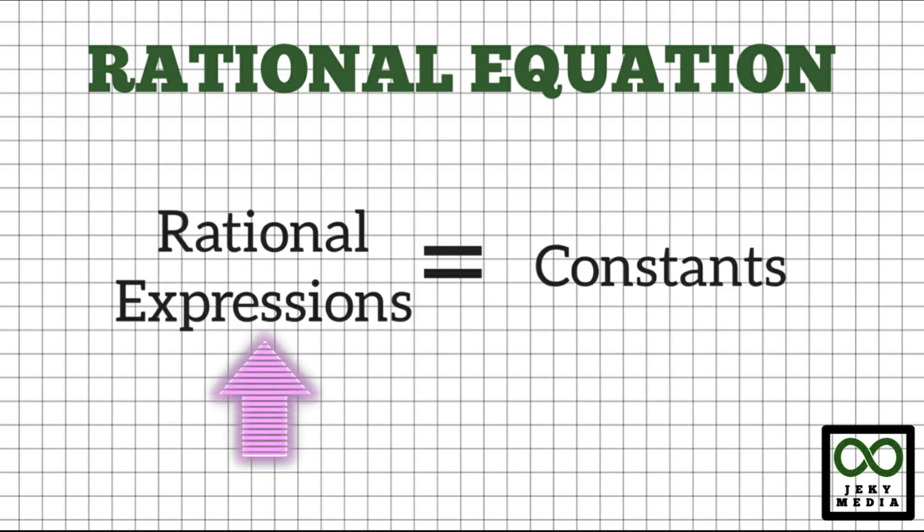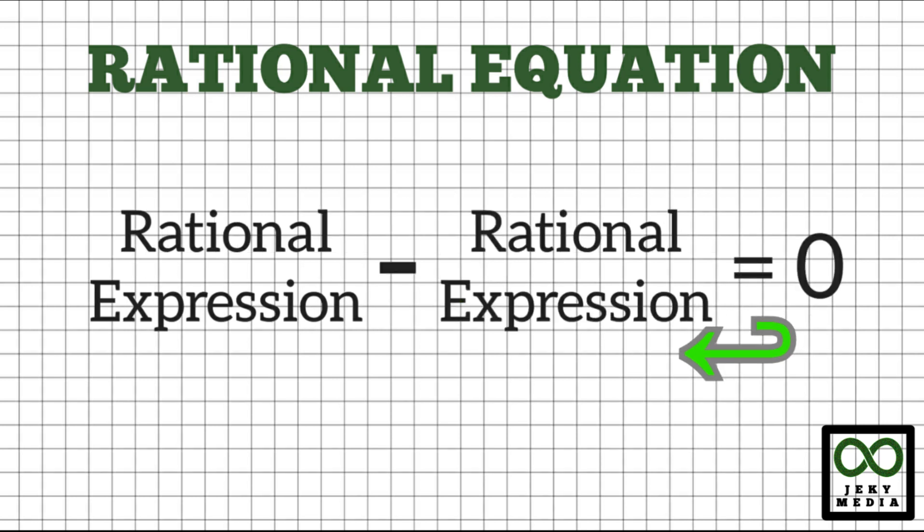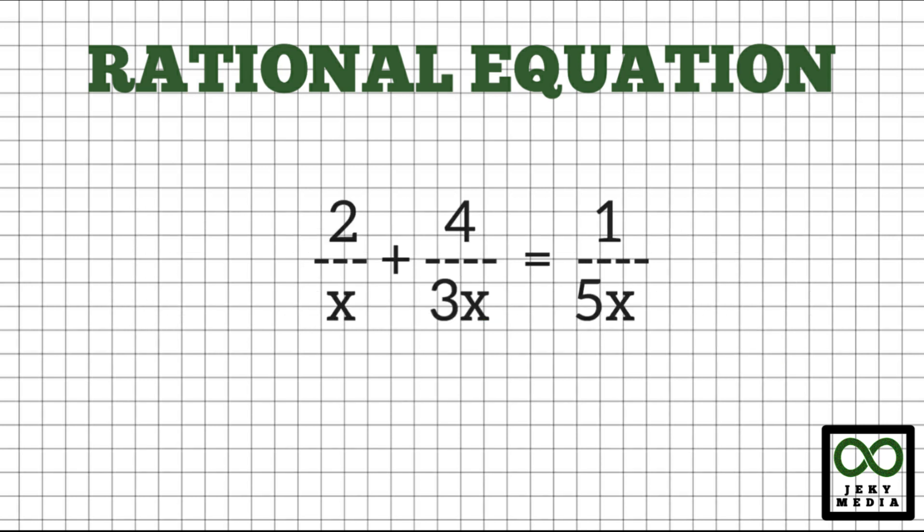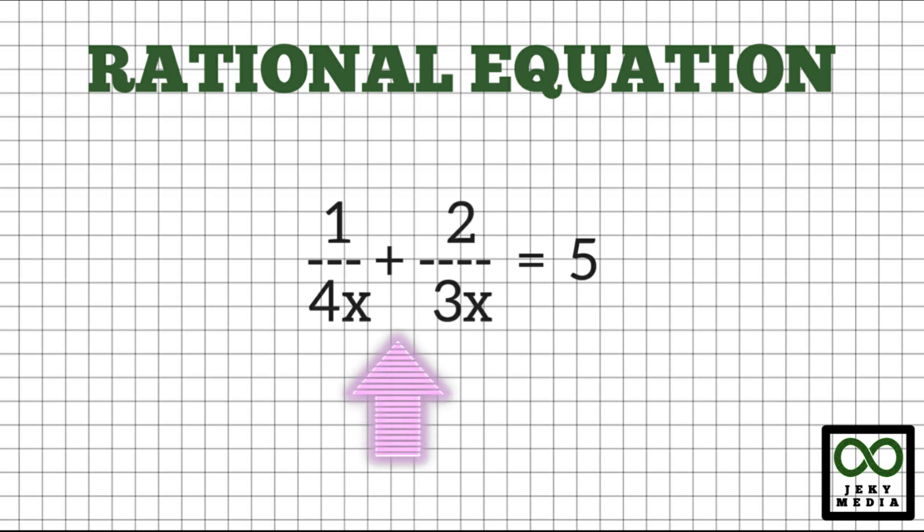Rational equations can be solved by cross multiplication or transposition. For example, 2 over x plus 4 over 3x equal to 1 over 5x. In this example, rational expressions are found on both sides of the equation. Also, 1 over 4x plus 2 over 3x equal to 5. In this example, rational expression is found on the left side, and a constant on the right side.